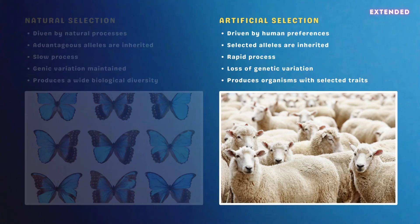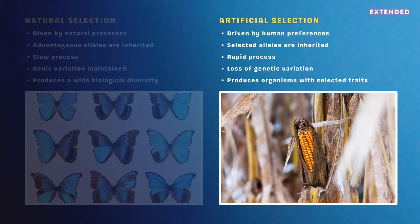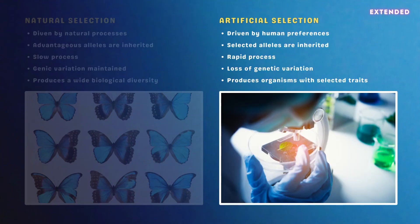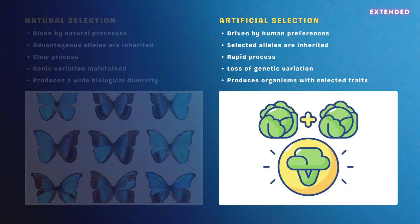Artificial selection, by comparison, causes variation to be lost, as only the individuals that possess characteristics valued by humans are retained. This may cause problems in the future if environmental conditions change, as traits that may have otherwise enabled the species to adapt and survive are no longer present in the gene pool. Artificial selection occurs as a result of human intervention, and is driven by human preferences and economics. It's also a much quicker process than natural selection.